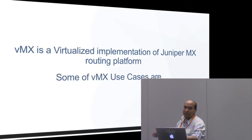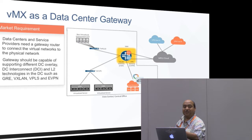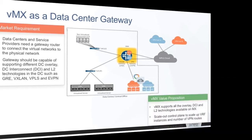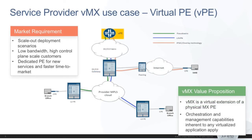I'm going to go over the use cases and describe why it is business critical and what the related issues are. One use case of VMX is the data center gateway, used by data centers and service providers. The marketing requirements are shown in the orange blocks, and our value proposition of what VMX does in such deployments is in the green box. Another use case is virtual PE, required in scale scenarios, particularly starting with lower bandwidth and expanding from there.